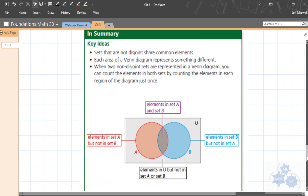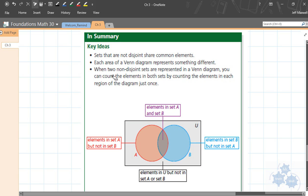So in summary here, this is the diagram, or the chart, on page 160 in your textbook. If we just review this real quickly. Sets that are not disjoint, that means that they're not completely separate, they overlap a little bit, and they share common elements. So in this diagram, A and B are not disjoint because it looks like there's a region where they overlap here. Each area in a Venn diagram represents something different. When two non-disjoint sets are represented in a Venn diagram, you can count the elements in both sets by counting the elements in each region of the diagram just once. So that's what we did. We counted those just once, and that had to add up to our total of 65.